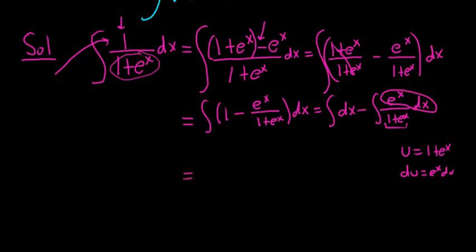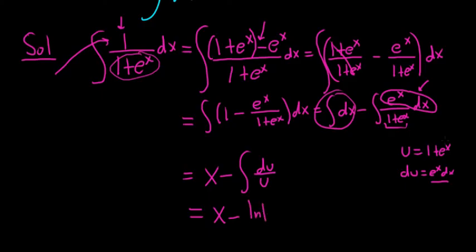All right, so let's finish this. This is going to integrate to x minus, and in this piece here it's circled, that's e to the x dx. That's just du, and then we have over u, because the bottom piece is u. This is equal to x minus the natural log of the absolute value of u. But we know that u is 1 plus e to the x.